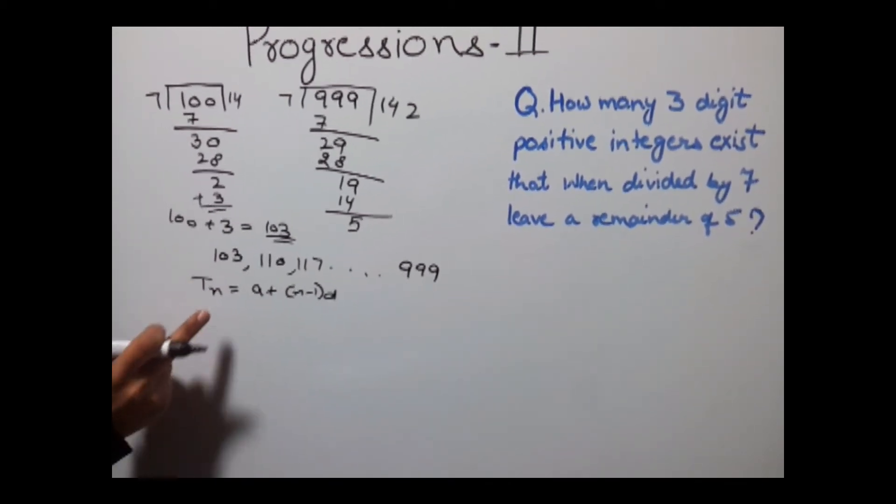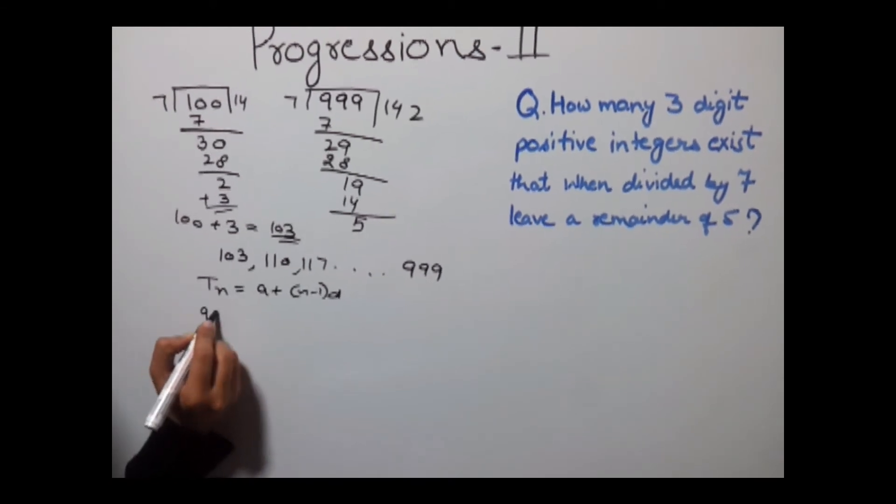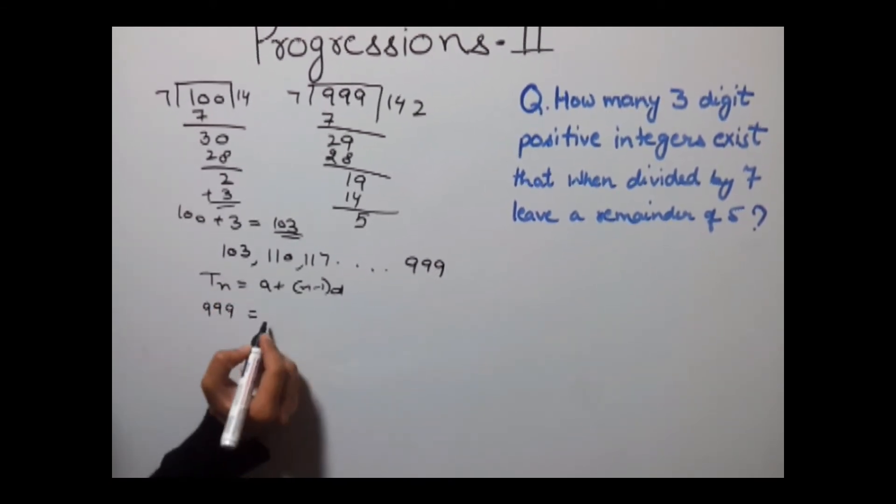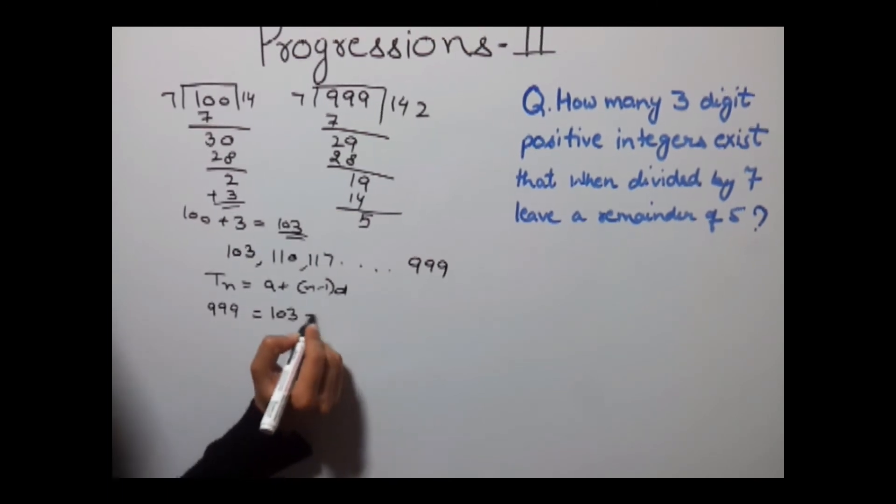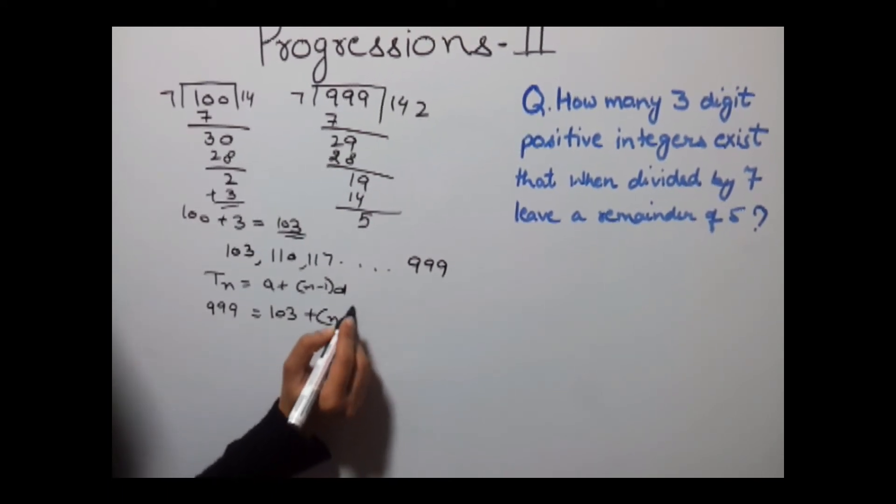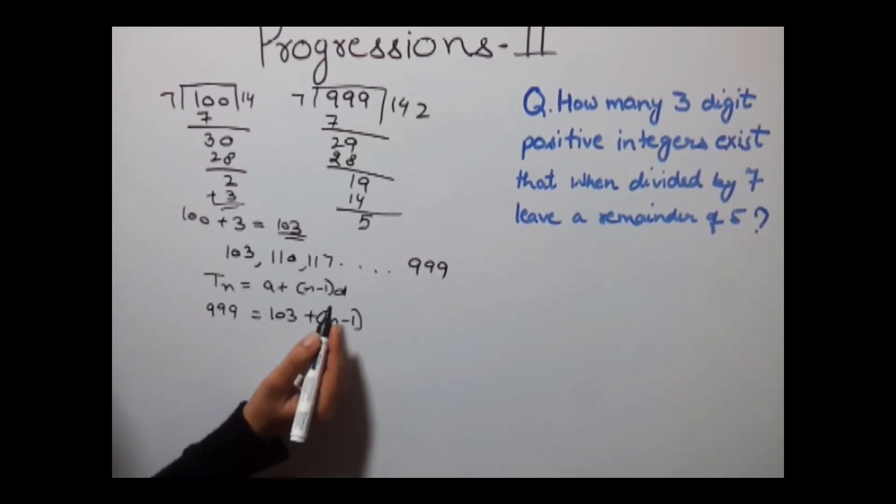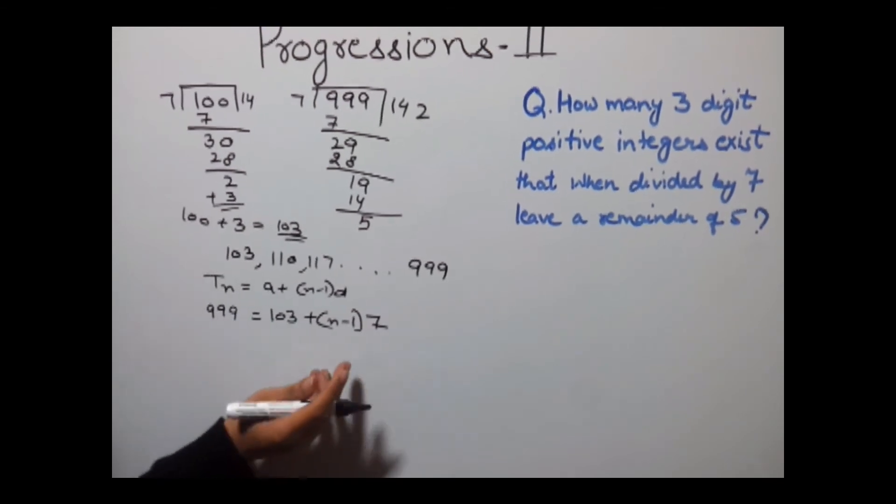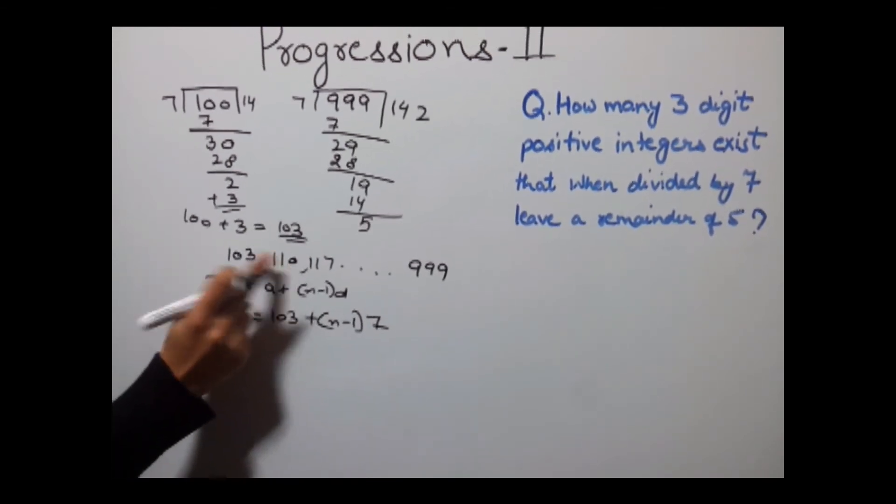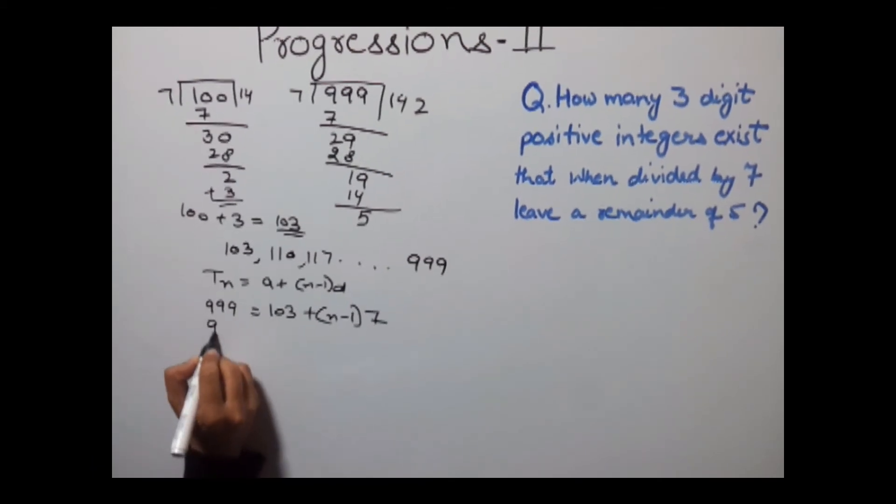Tn, the last term, is 999, a, the first term, is 103, plus (n-1). We need to calculate n, and the value of d is 7, which is the successive term minus previous term.